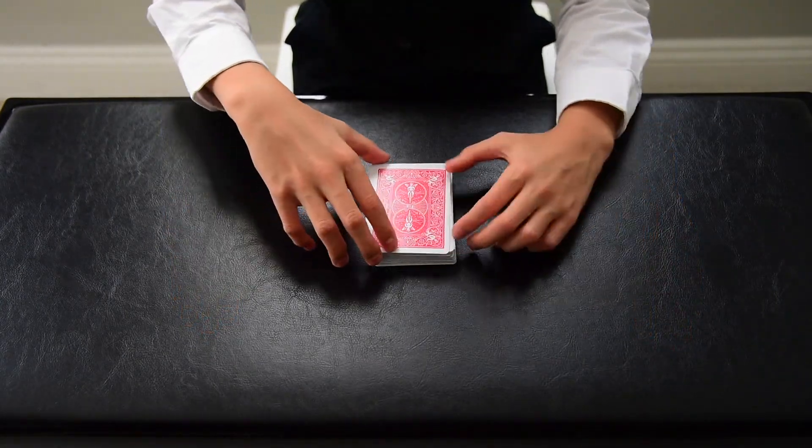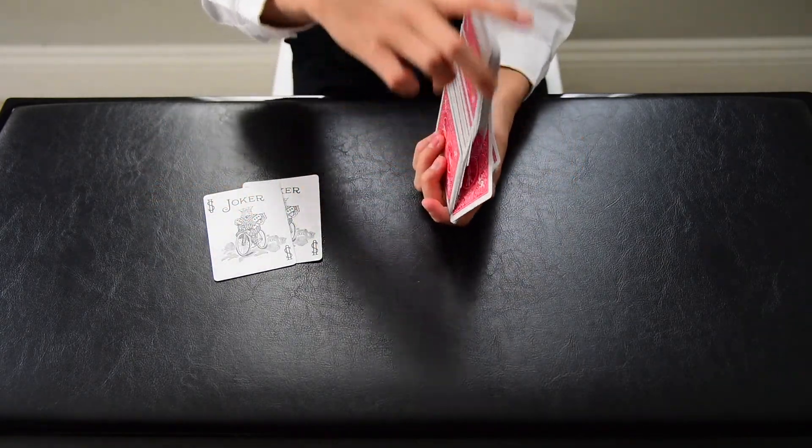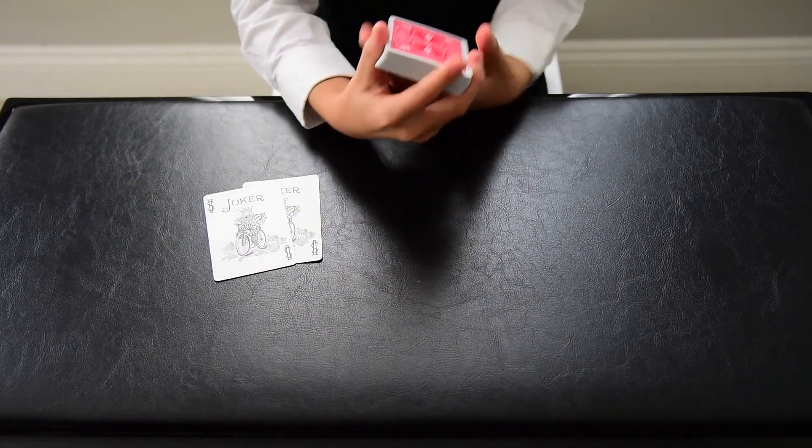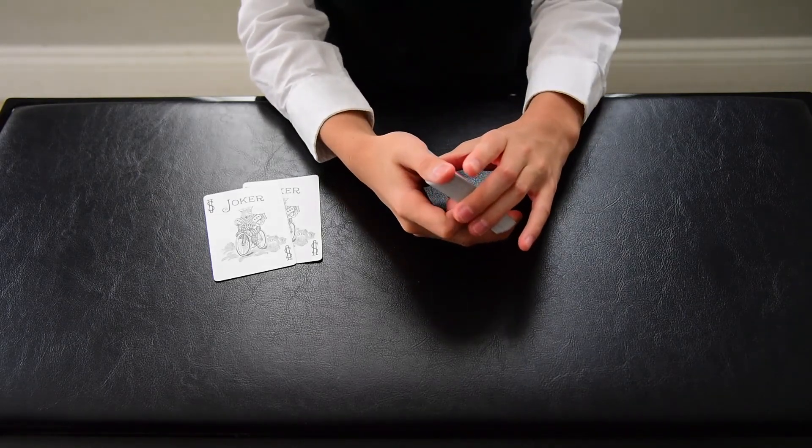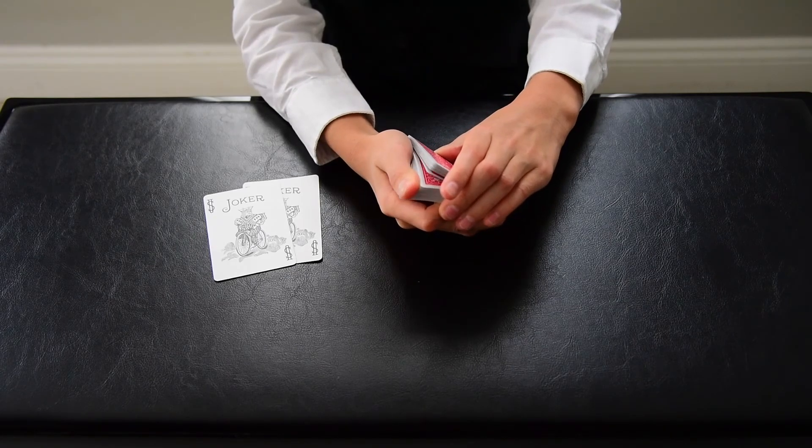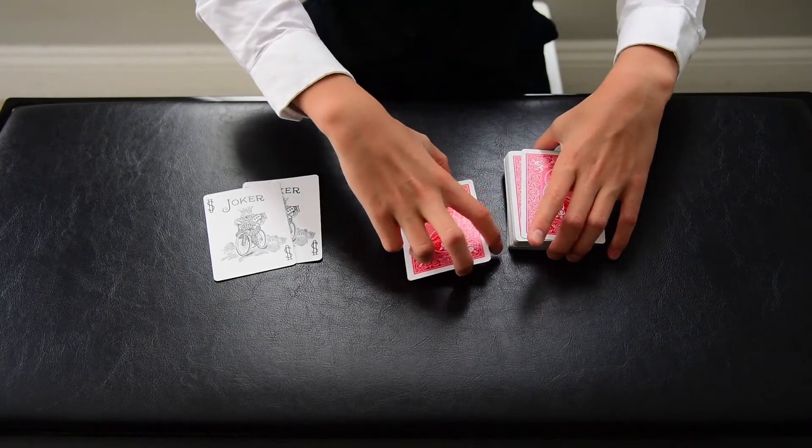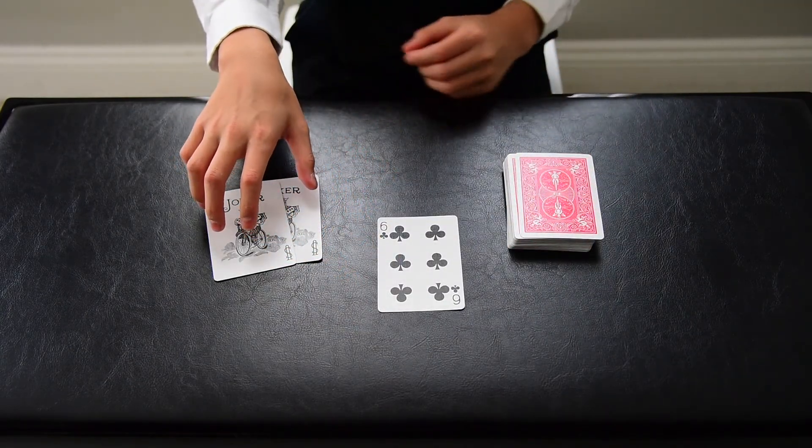For the first trick, we begin by removing the jokers. Then I shuffle the deck and ask my spectator to call stop anywhere as I riffle down the edge of the deck. Stop. This is going to be the spectator's card. In this case, the six of clubs.